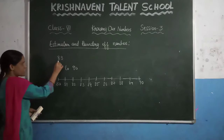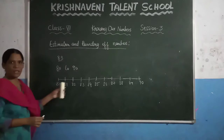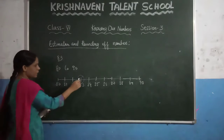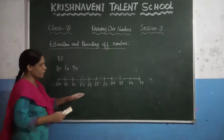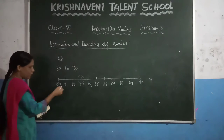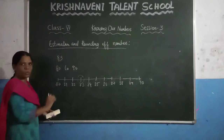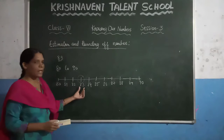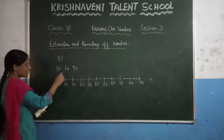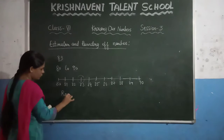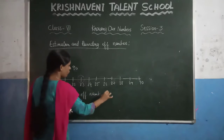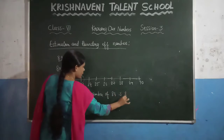You know that 83 lies between 80 and 90. You can observe that 83 is far from 90 — in between, how many numbers are there? You have 6 numbers. You can observe that 83 is very near to 80 because in between only 2 numbers are there. So you can observe that 83 is nearer to 80 compared to 90. So we can say that the rounding of 83 is 80.